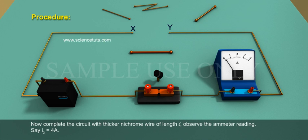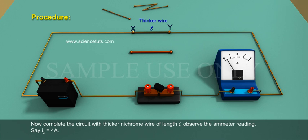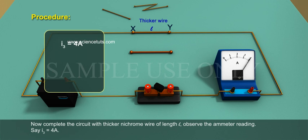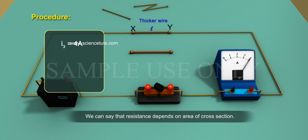Now complete the circuit with thicker nichrome wire of length L. Observe the ammeter reading. Say I3 is equal to 4A. We can say that resistance depends on area of cross section.